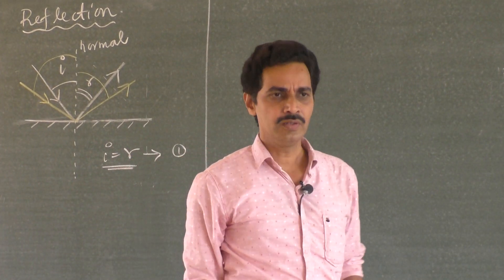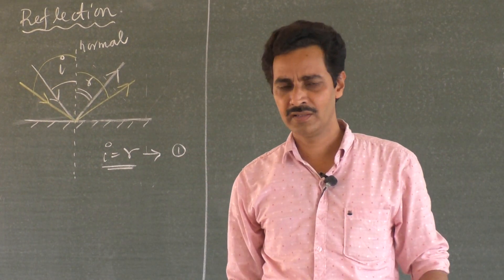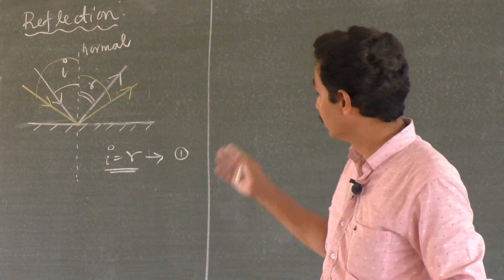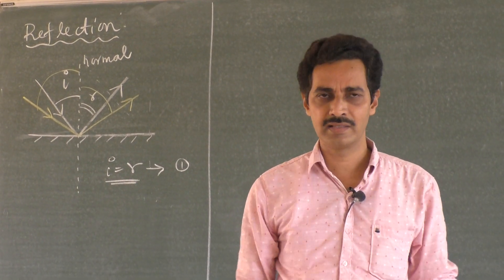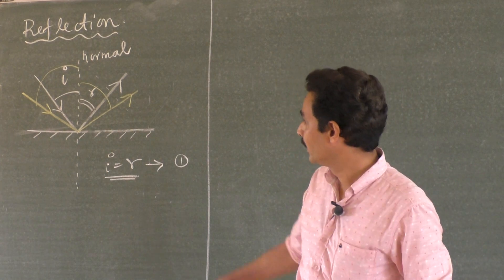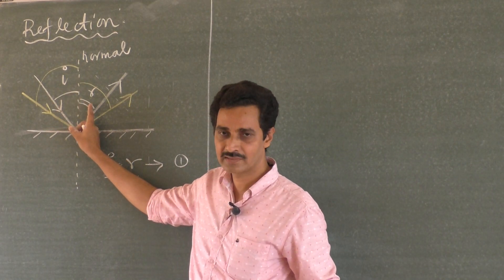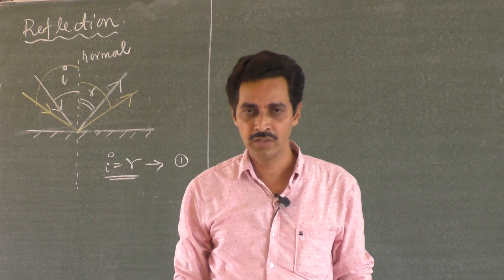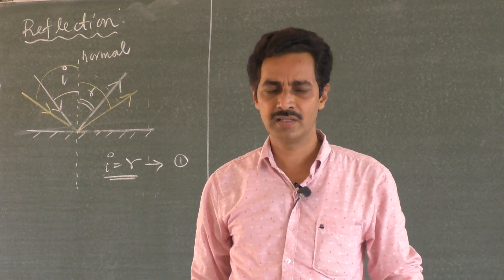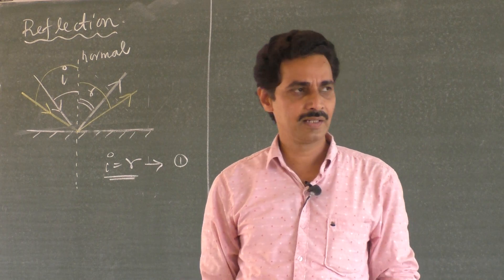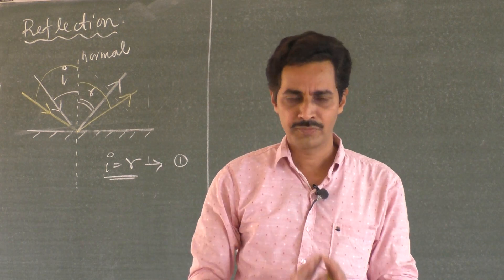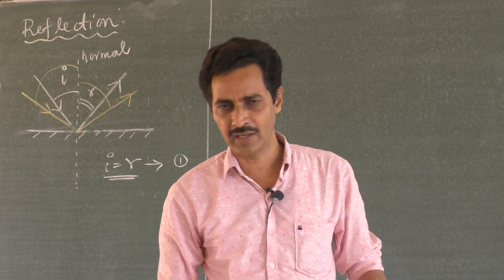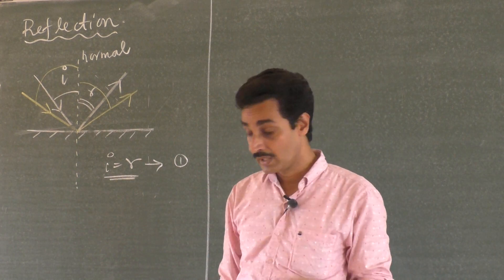This is the first law of reflection. It was measured on different occasions and on different media. If you take a laser beam and make it fall on different media, measuring the angles always gives angle of incidence equal to angle of reflection. If you make the ray fall at 30 degrees, it bounces back at 30 degrees with respect to the normal. At 60 degrees, it bounces back at 60 degrees. Angle of incidence is always equal to angle of reflection, wherever the light ray gets reflected — whether from a wall, a perfect mirror, a cylindrical vessel, or anywhere.